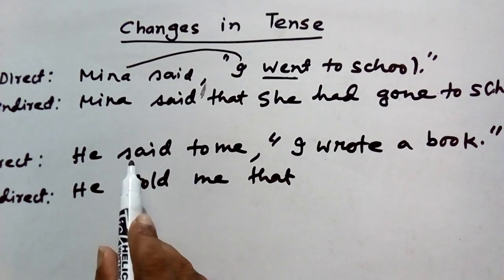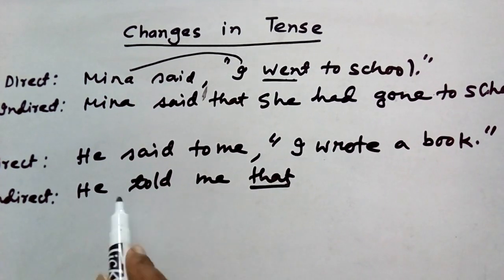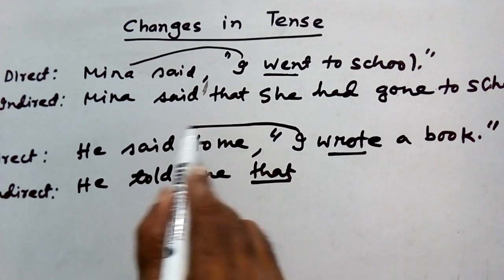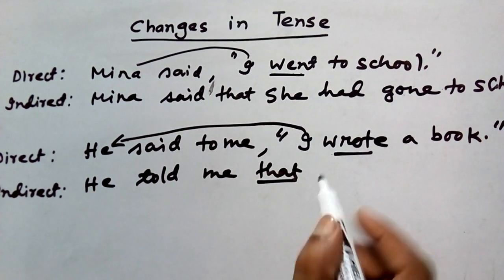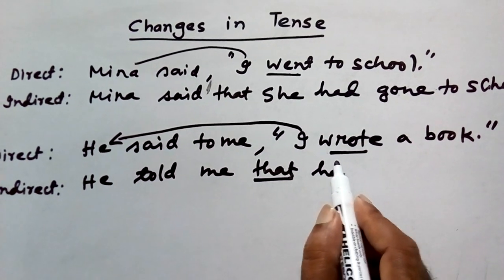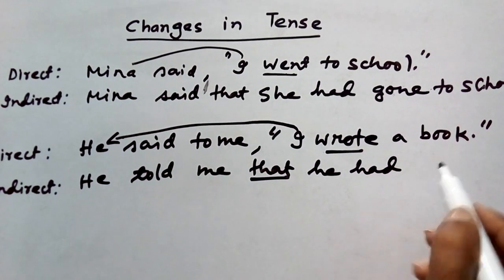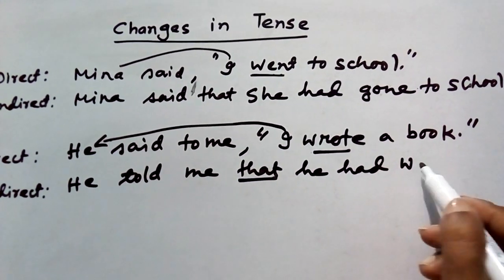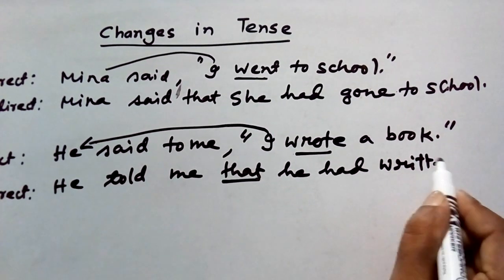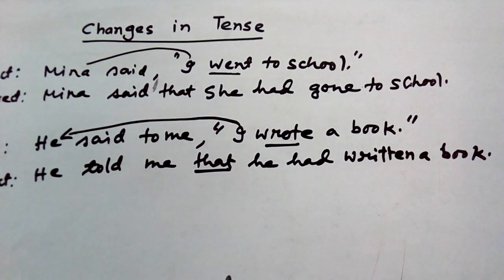So the reporting clause and reported clause would be connected by 'that.' He told me that — 'I' here denotes 'he,' so — he wrote. It is past simple, so it will turn into past perfect tense. In past perfect we have the auxiliary 'had,' and the verb changes to past participle: 'written' — W, R, I, T, T, E, N — a book. After completing the sentence, we use a full stop.